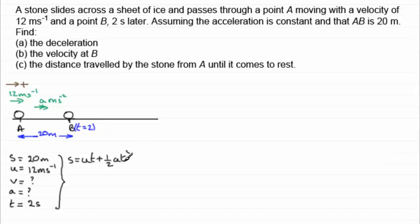So all we need to do is put in our values. We've got S is 20 equals U, which is 12, times the time T, which is 2. Then we've got plus a half A, A we don't know, times T squared, 2 squared. So if we work this out, we've got therefore 20 equals, well 12 times 2 is 24, and then we've got half of 4, which is 2. So we've got plus 2A. Take away 24 from both sides, that gives us minus 4 equals 2A.